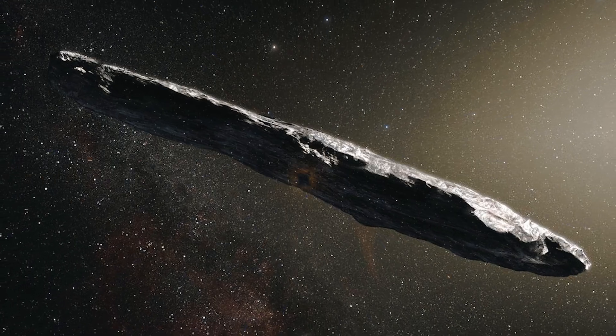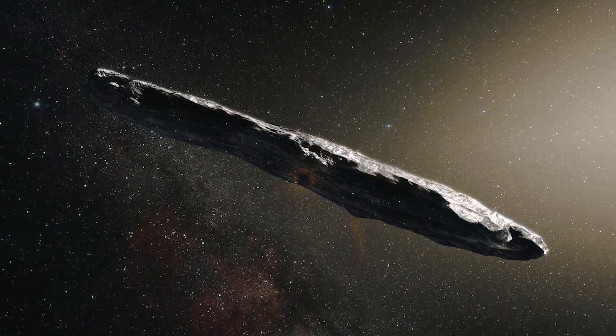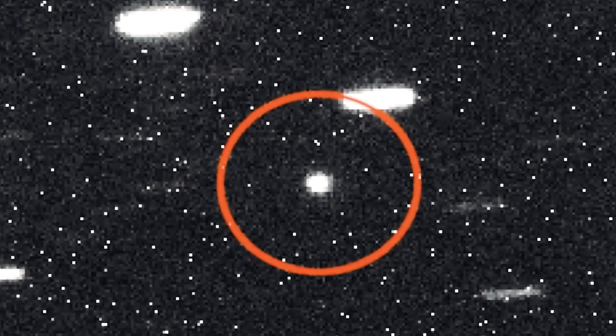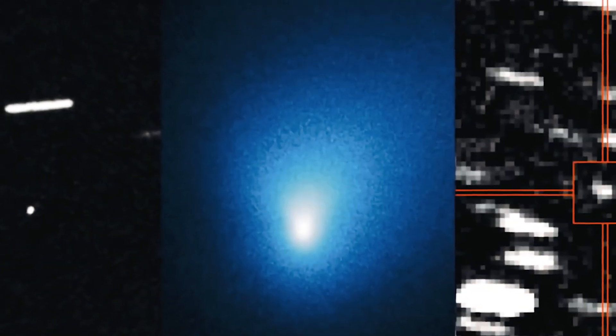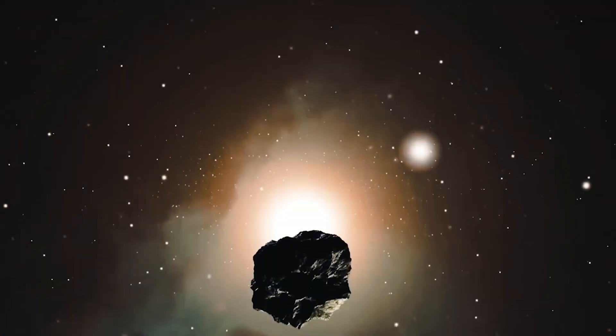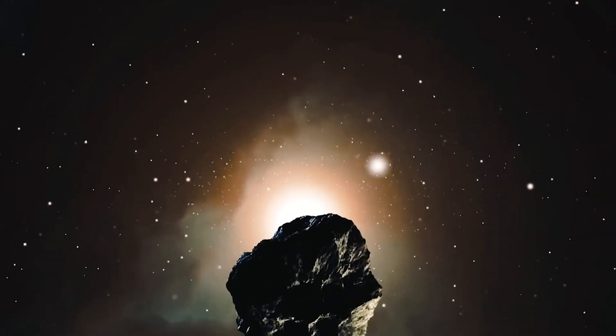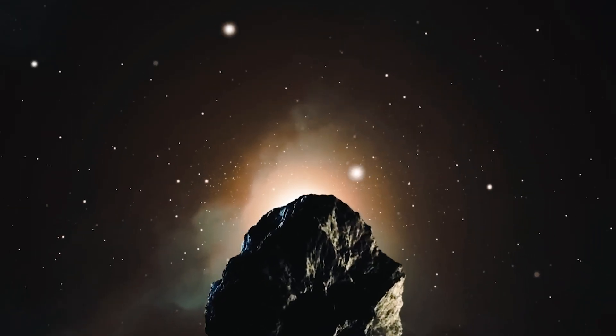Now, alongside Oumuamua and 2i Borisov, 3i Atlas becomes the third vital member of a tiny but transformative group, interstellar visitors that carry messages from other solar systems. Each one adds a chapter to our understanding of how planets and comets form throughout the galaxy.